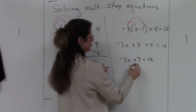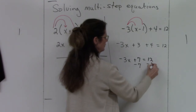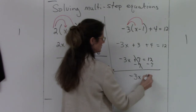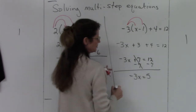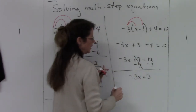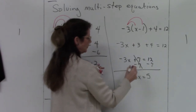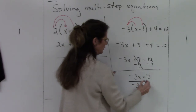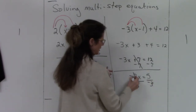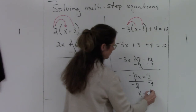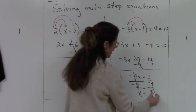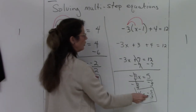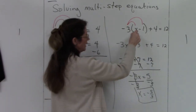Back to a two-step equation. Subtracting 7 from both sides gets rid of the 7, leaving negative 3x equals 5, since 12 minus 7 is 5. This is now a one-step equation showing multiplication, so I divide both sides by negative 3, and I end up with x equals negative 5 thirds.